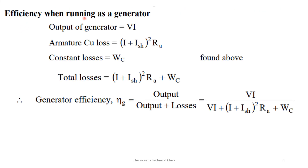For efficiency when running as a generator: output = V × I; total losses = (I + I_SH)² × R_A + W_C; generator efficiency = output divided by (output plus losses).